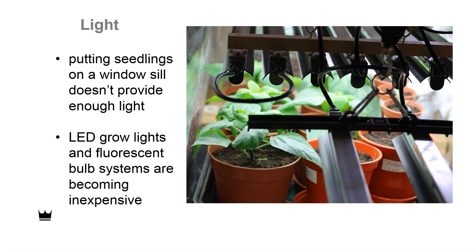Putting seedlings on a windowsill doesn't provide enough light — you'll see that they grow very long and spindly in their desperate effort to get light. So if you're going to grow inside, you need grow lights. LED grow lights and fluorescent bulb systems are becoming quite inexpensive and well worth the money. You want to put the seedlings surprisingly close to your grow lights, or you'll have the same problem of spindly growth.